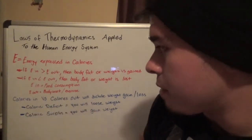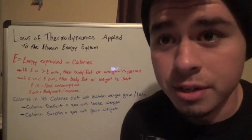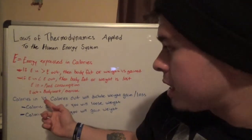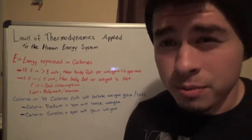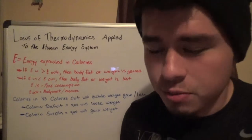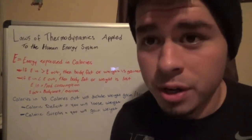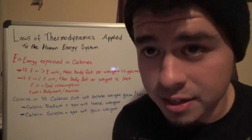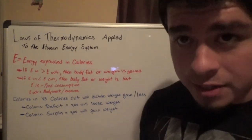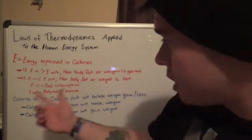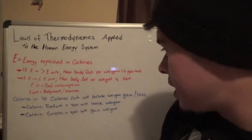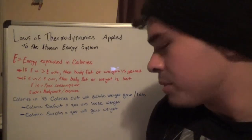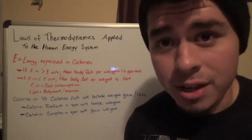E in stands for food consumption — what you eat, calories in. And E out will be your body work, which is your structured and unstructured exercise, whether you're a construction worker or sitting at a desk. To put it in a simpler perspective: calories in versus calories out — that will dictate your weight gain or weight loss.